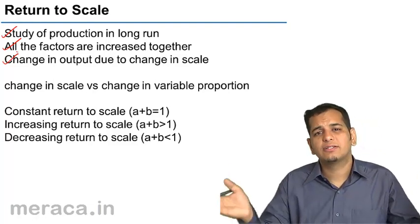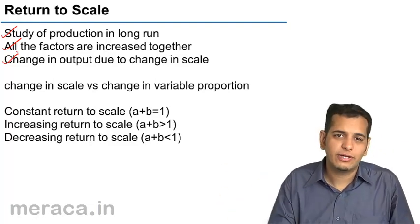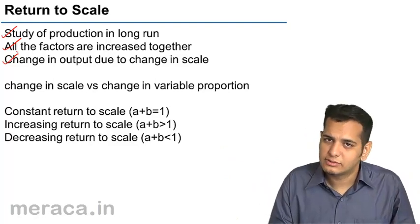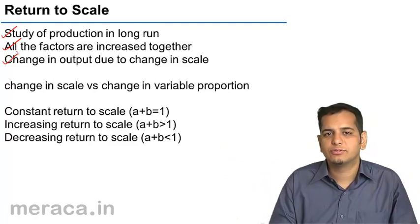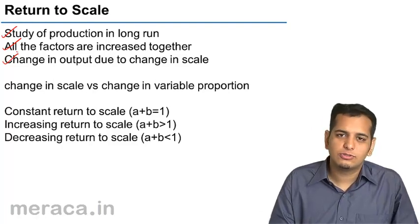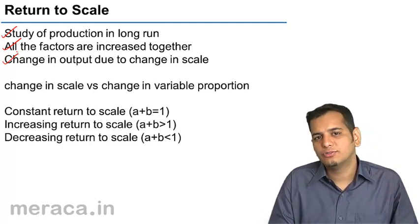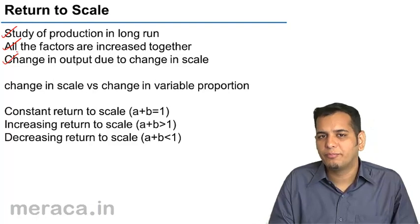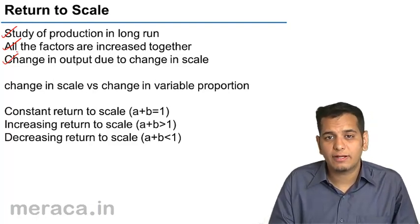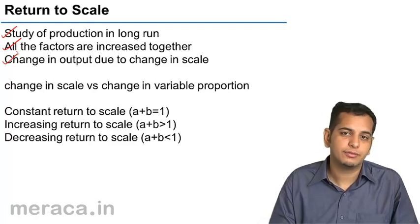When all the factors are increased or decreased together, we call it a change in scale. This is the difference, and this is possible because the law of returns to scale operates in the long run where all the factors can be changed together.